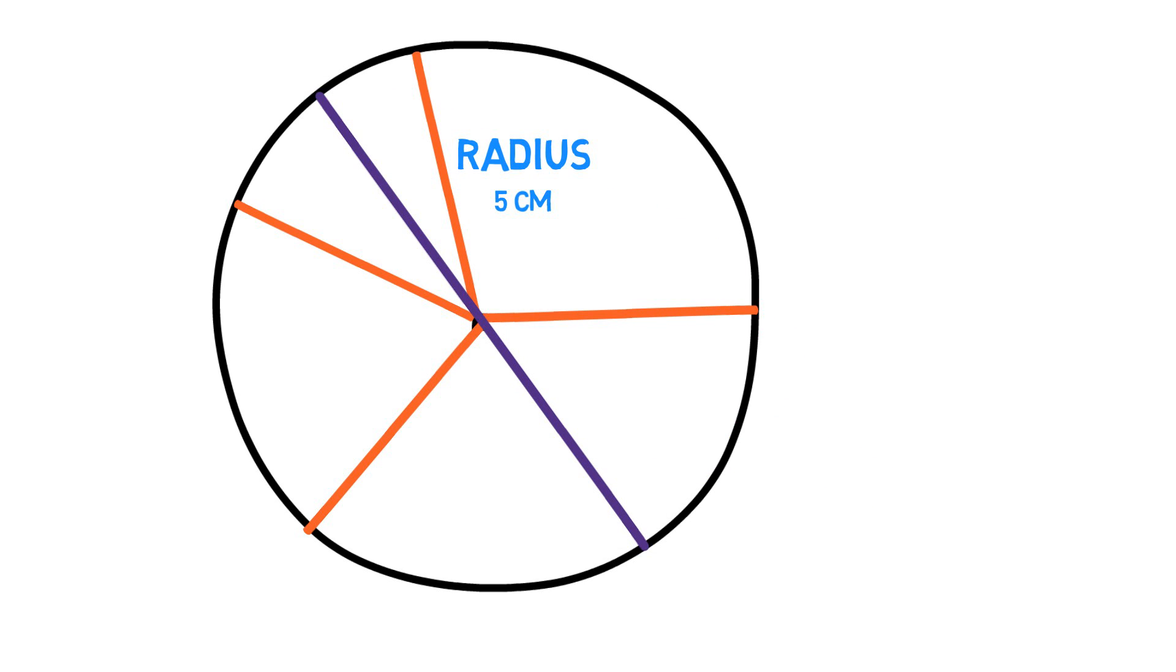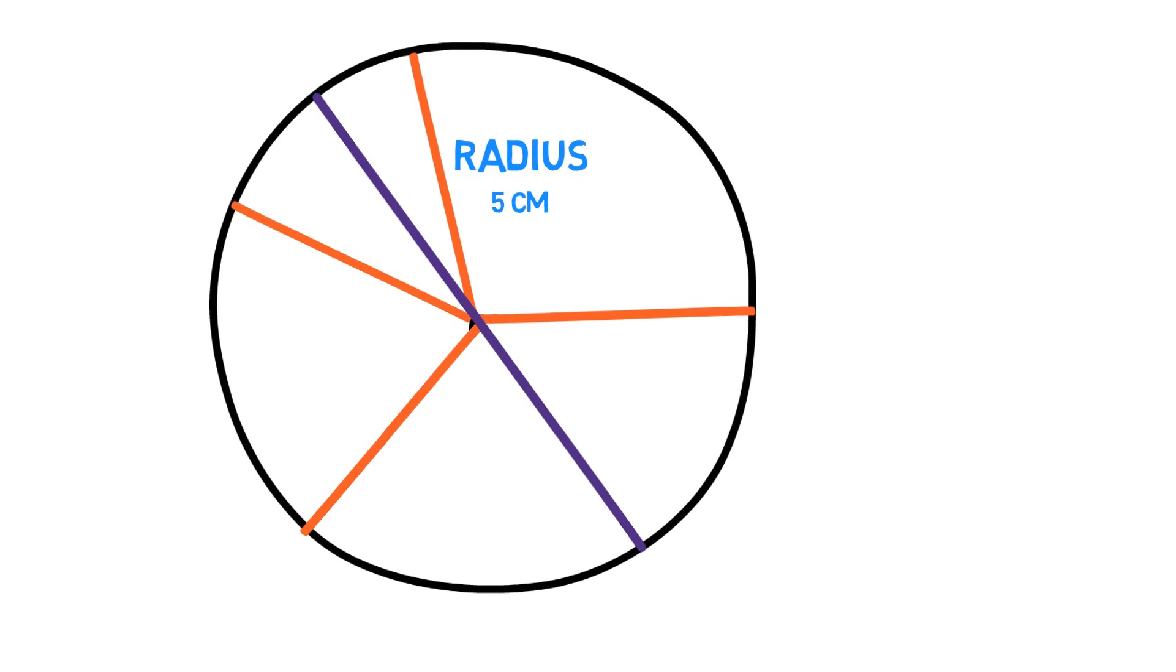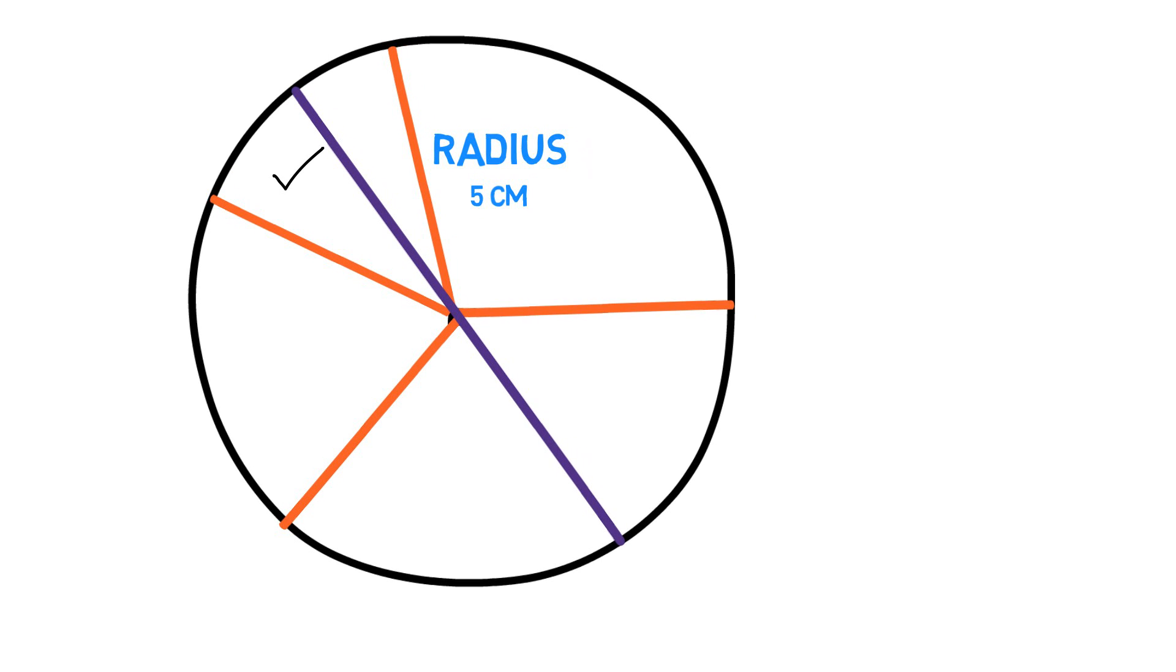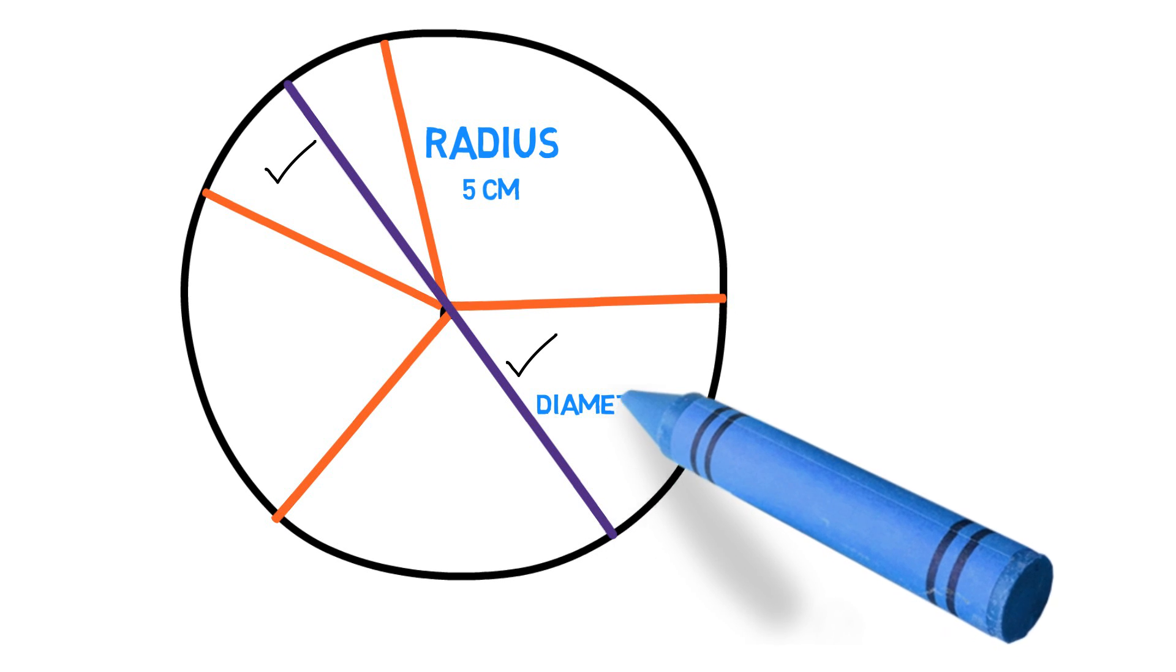Now what if I drew a straight line like this starting at one point on the circle passing through the center and going all the way to another point on the circle. Some of you may say that this is one radius here and this another one and you would be right. But there's another term for such a line. It's called the diameter of the circle.